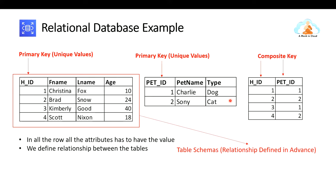For all tables, there is something called a primary key — a column whose value is unique across the entire table. Here, HID is unique. You might ask why FNAME or LNAME wasn't chosen as the primary key. The reason is that two or more people can have the same first name, last name, or age, but the human ID we define is never repeated. Only one person will have human ID 1, another will have 2, 3, 4, and so on. Even if a second person named Christiana Fox is added, their HID would be 5, making HID unique — that is why we identify it as our primary key.